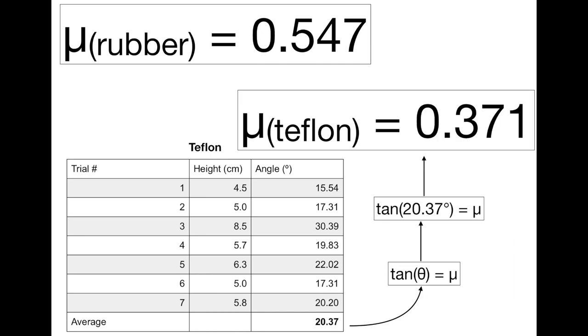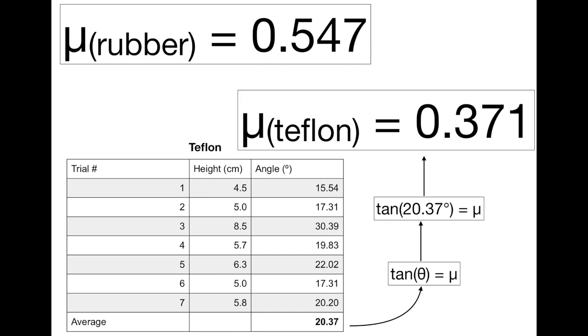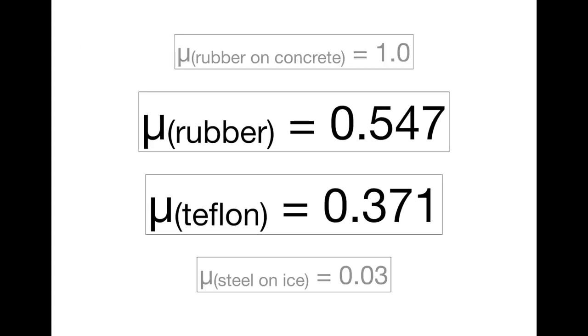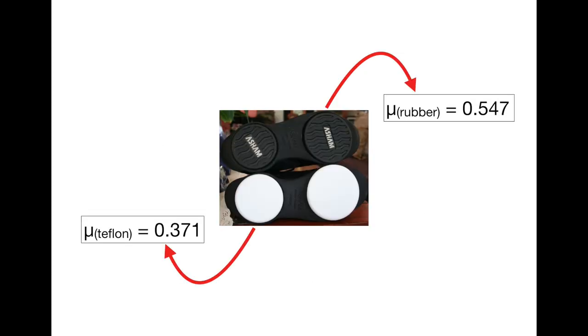Therefore, the coefficient of friction of Teflon on pebbled ice is 0.371. In conclusion, Teflon has a smaller coefficient of friction than rubber. The data shows that the slippery one, Teflon, is not too slippery so that you don't fall when you're on the ice and that the rougher one, rubber, isn't too rough that you can't still slide.